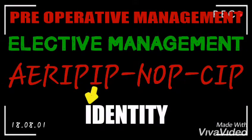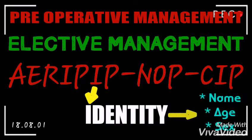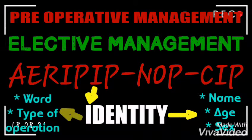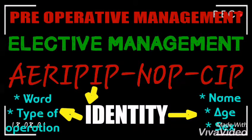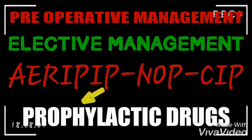The next part is Identity. Under identity, you need to record the patient's name, age, sex, ward, and the type of operation that should be done.